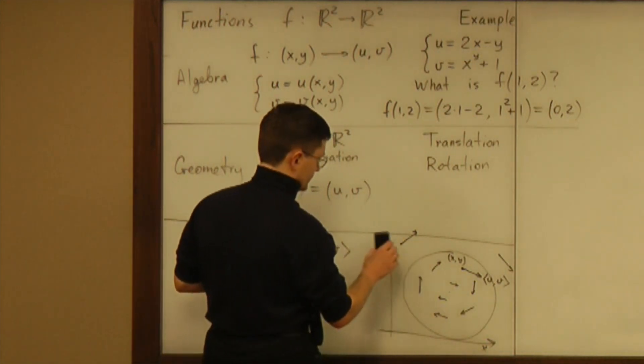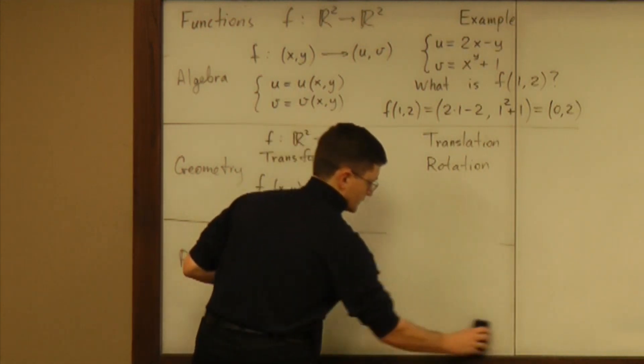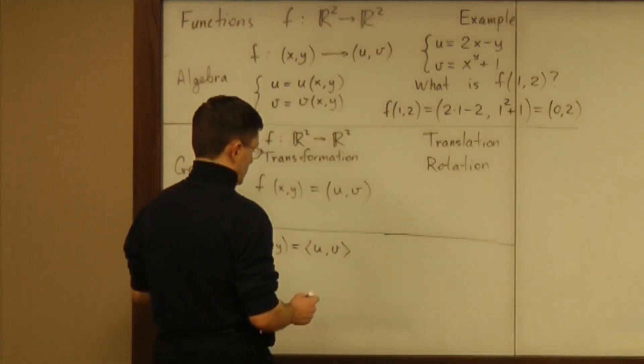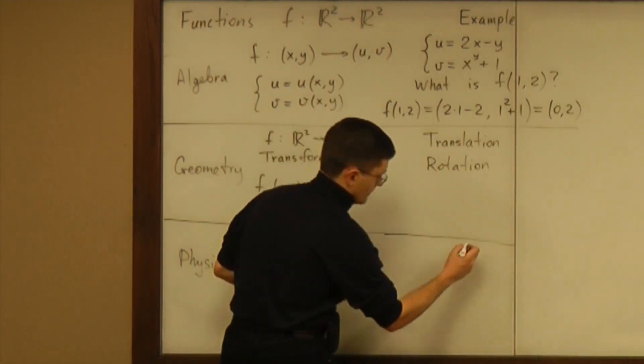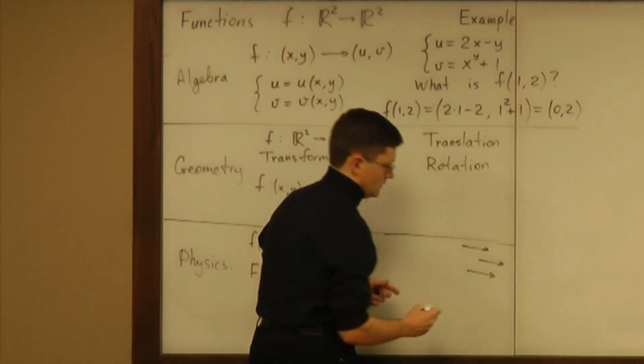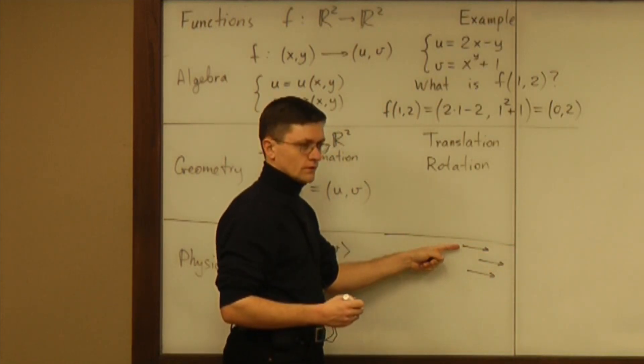So what would be examples? Examples of flows. Easy flows that we can understand. The probably easiest flow is when every point on a plane is moving with the same velocity.